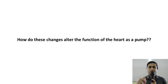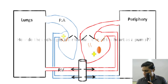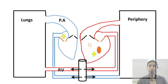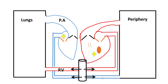How do all these changes alter the function of the heart as a pump? The left ventricle pumps oxygenated blood into the arterial system, supplying oxygen to peripheral tissues. Once oxygen is unloaded, the blood becomes oxygen-poor and enters the venous system. The veins carry poorly oxygenated blood to the right atrium, which sends it to the right ventricle. The right ventricle pumps this blood into the pulmonary arteries, where it gets oxygenated in the lungs, and the pulmonary veins carry oxygenated blood back to the left atrium, which pumps it into the left ventricle.